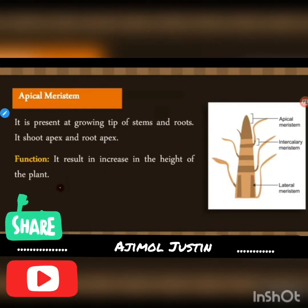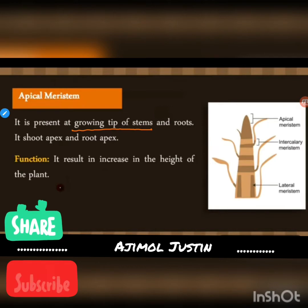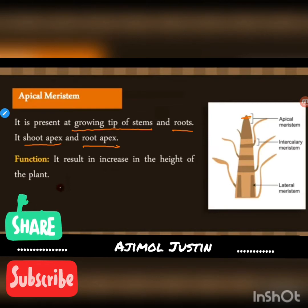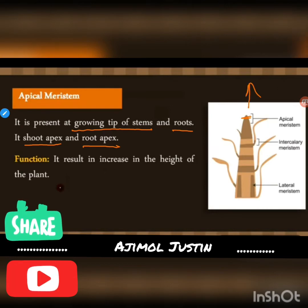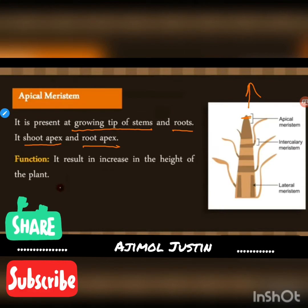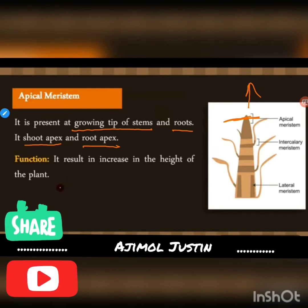Apical meristem is present at the growing tips of stems and roots — that is the shoot apex and root apex. Its function is to increase the height of the plant. If you cut the apical meristem with a knife, the length of the plant will not increase.